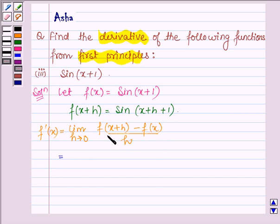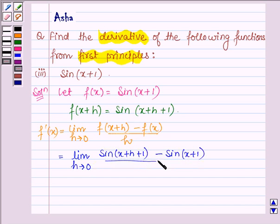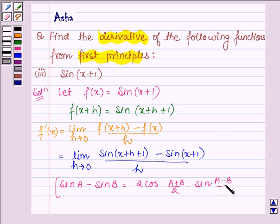Now let us substitute the values of f(x plus h) and f(x). We have sine of x plus h plus 1 minus sine of x plus 1 over h. The formula of sine a minus sine b is 2 cos of a plus b over 2 times sine of a minus b over 2.